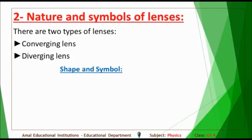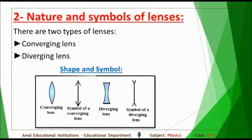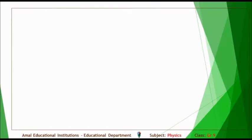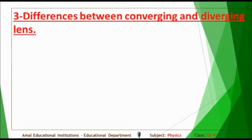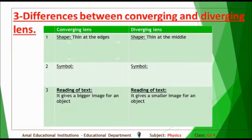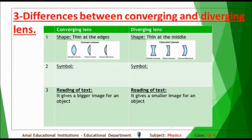Nature and symbols of lenses. There are two types of lenses: one, converging lens; two, diverging lens. Regarding shape and symbols: a converging lens is thin at the edges, while a diverging lens is thin at the middle. Each type has its own symbol.